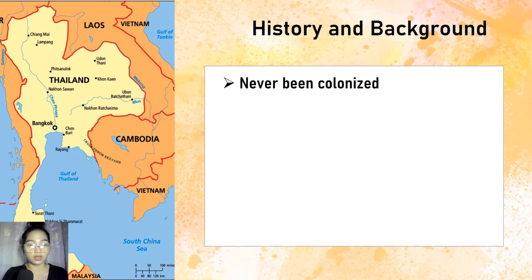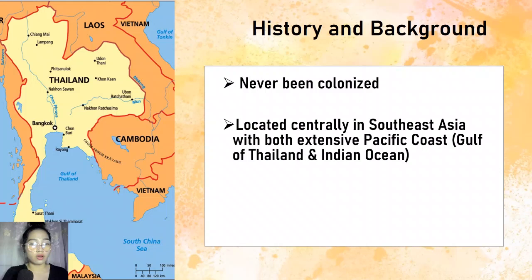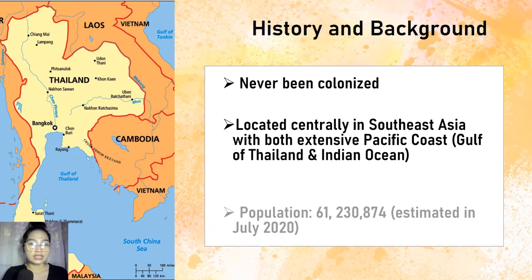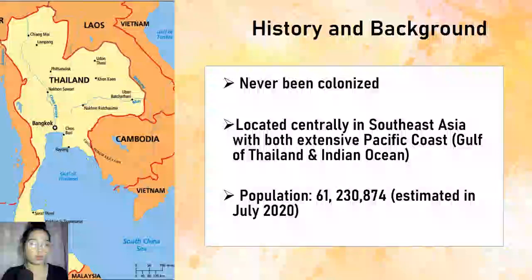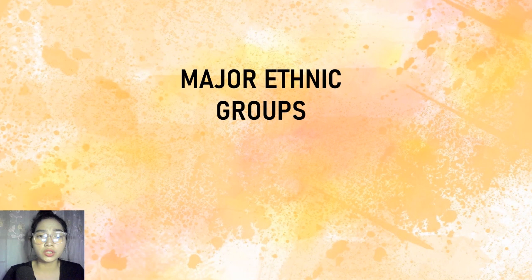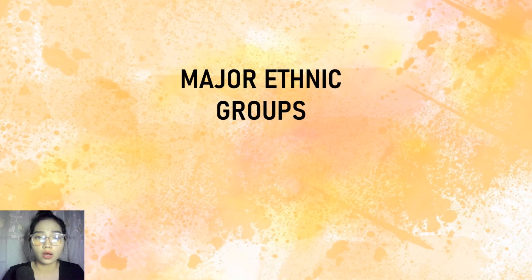Thailand has a population of 61,230,874 estimated in July 2020, making it the 16th largest country in the world. Though not as culturally diverse as other Southeast Asian countries such as Myanmar, Laos, or Indonesia, Thailand nevertheless has considerable ethnic diversity, containing more than 30 ethnic groups varying in history, language, religion, appearance, and patterns of livelihood.